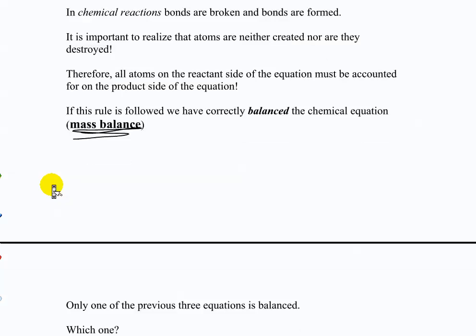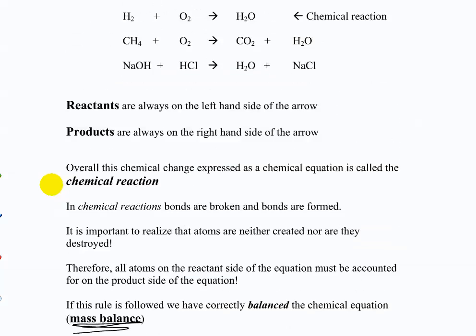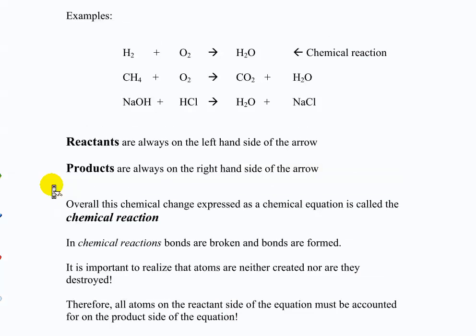So bonds are broken, bonds are formed. Atoms aren't created or destroyed - that's the law of conservation of mass. And because of that law, we need to have the proper mass balance on both sides of the equation. Let's look at the first one. What's wrong with the first equation there? Oxygen, yeah. According to that equation, in this reaction, an atom of oxygen just disappeared. And we know that that doesn't happen.